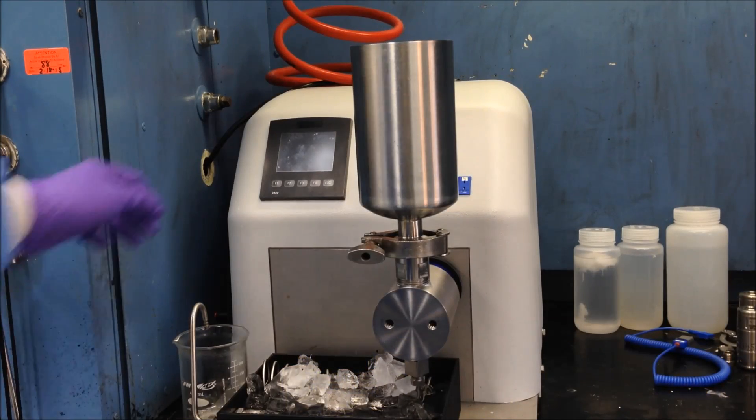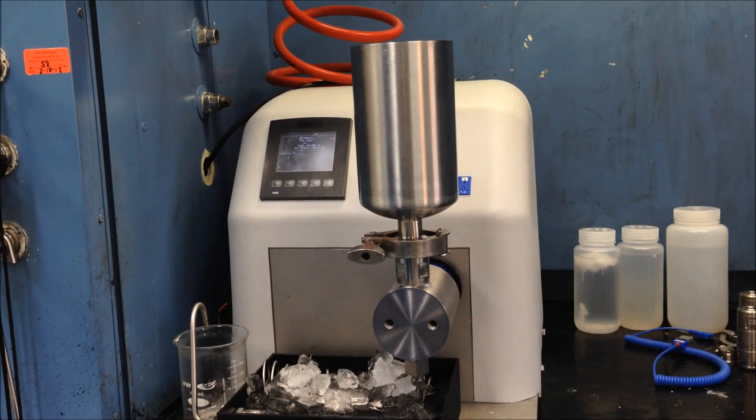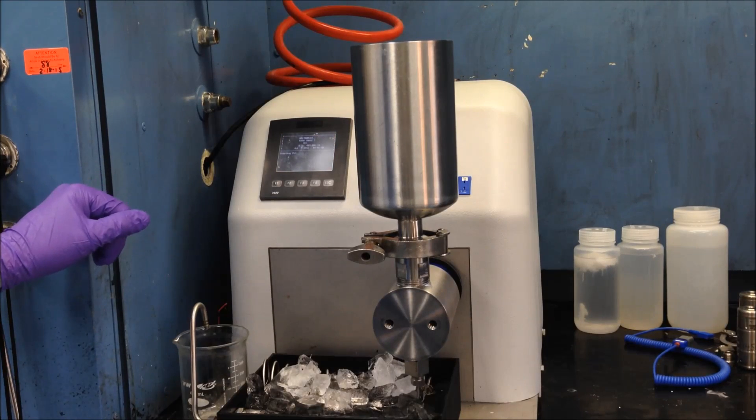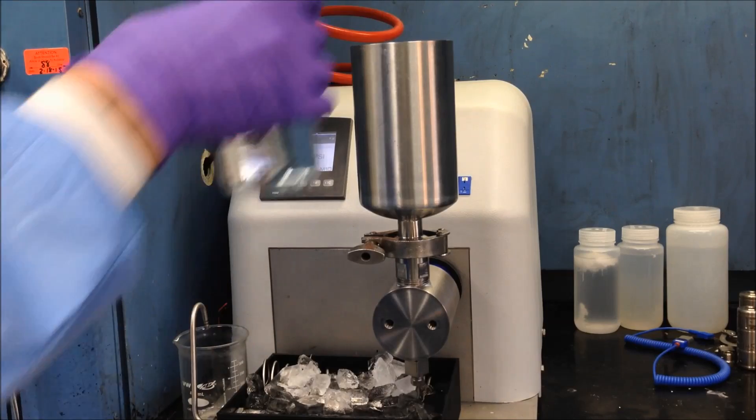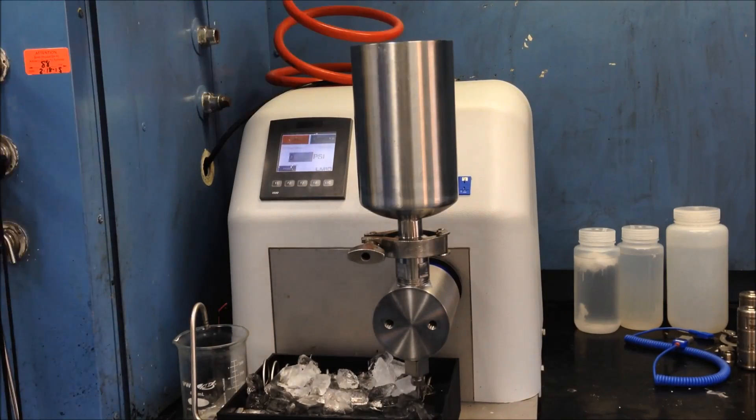To prime the machine, turn the machine on and hit continue on the home page. Once the home page appears, we can add water to the reservoir and press the prime button to remove air from the system.